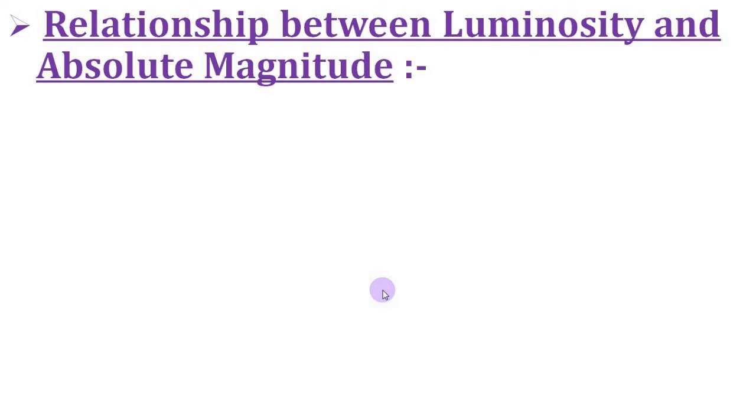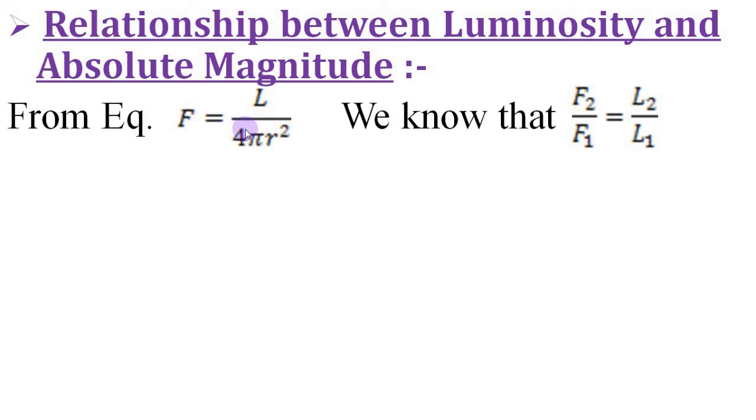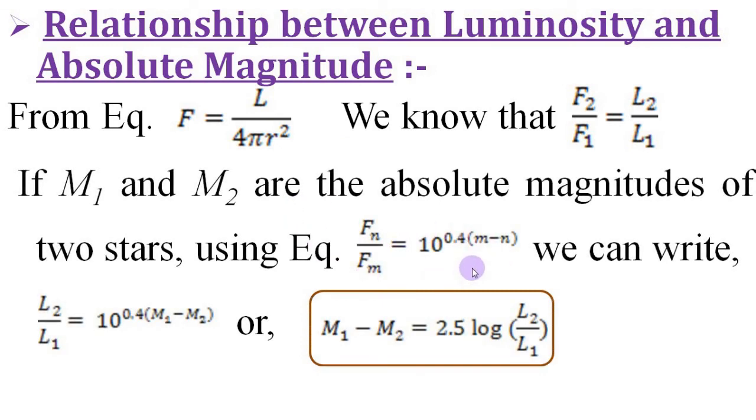We can also relate the absolute magnitude of stars to their luminosities. From this equation, we know that the ratio of radiant flux of two stars at the same distance from the point of observation is equal to the ratio of their luminosities. That means, F₂/F₁ equals L₂/L₁. Here we consider r is constant for the two stars having different luminosities L₂ and L₁. Thus, if M₁ and M₂ are the absolute magnitudes of two stars, then using this equation, we can relate their luminosities to M₁ and M₂ as this. Or finally, we can write the boxed equation as you see on the screen. Thus, absolute magnitude of a star is a measure of its luminosity or intrinsic brightness.